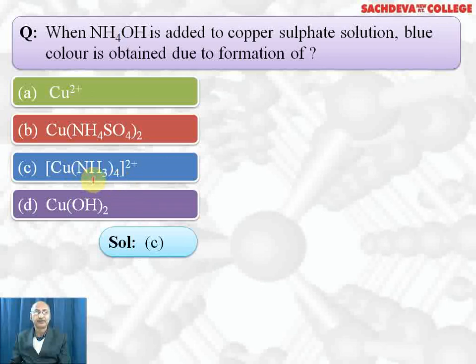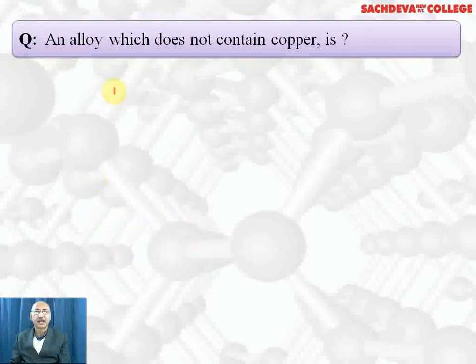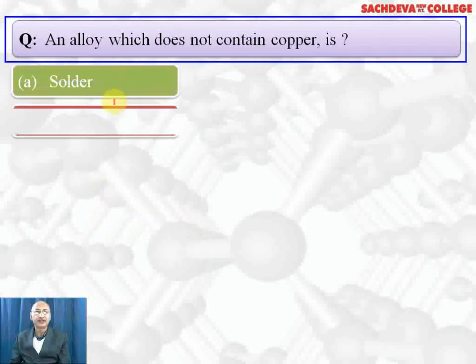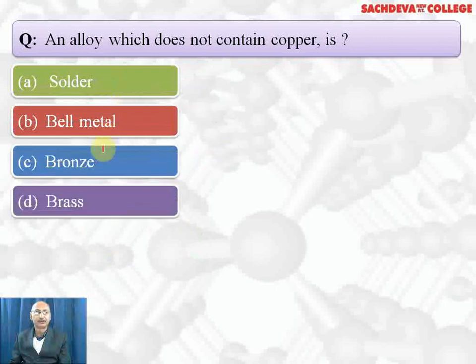An alloy which does not contain copper is solder, bell metal, bronze, or brass. Bell metal, bronze, and brass all contain copper. Solder is an alloy of lead and tin and it is used for soldering purposes. So A part is the correct answer.